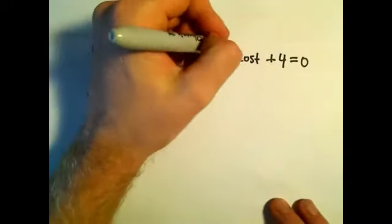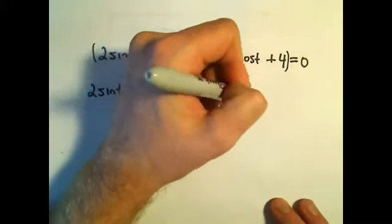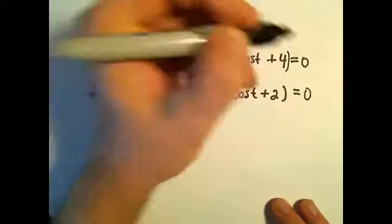Notice from our second two terms, we can do the same thing. We can factor out a 2. And that will leave us with cosine of t plus 2, equals 0.